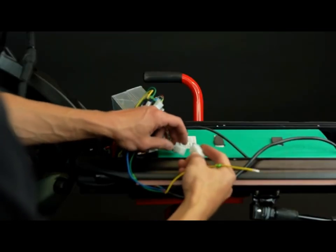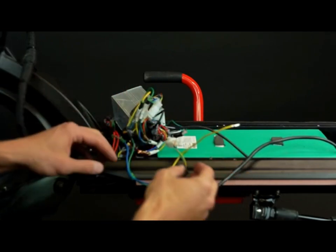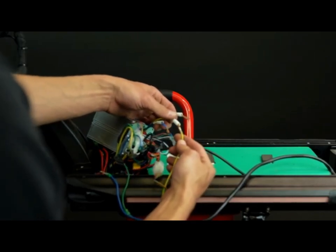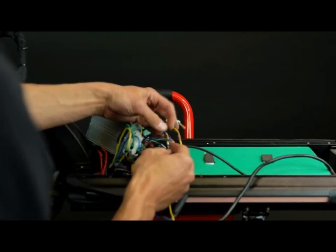Next up is connecting the wires. First, reconnect the white plug-and-play connector. Now grab three colored wires and attach them to their colored counterparts. Yellow to yellow, blue to blue, and green to green.